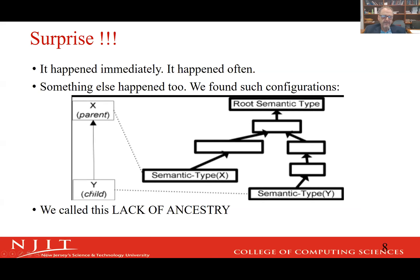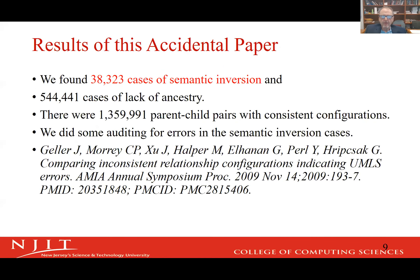When I dug in a little more, I found something else surprising. Concept Y is a child of concept X in many cases. But when I map this through semantic types, it turns out that X and Y are in no hierarchical relation to each other. If you keep going up far enough you find a common ancestor, but if there is a parent-child relationship between concepts — like if pneumonia is a lung disease — shouldn't there be a similar connection between their semantic types? We call this 'lack of ancestry.'